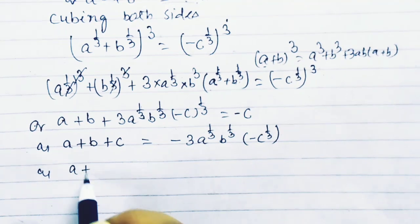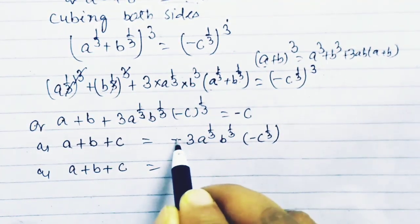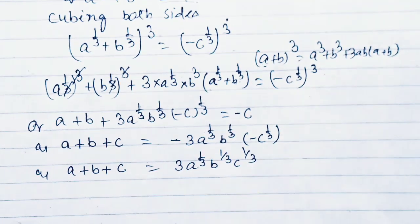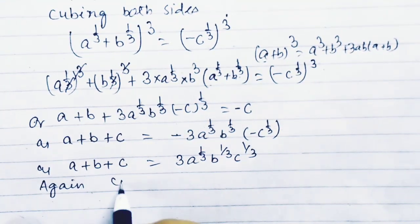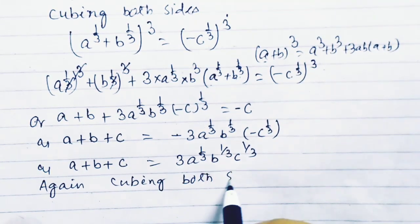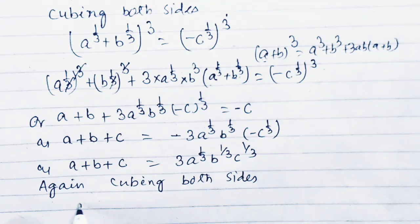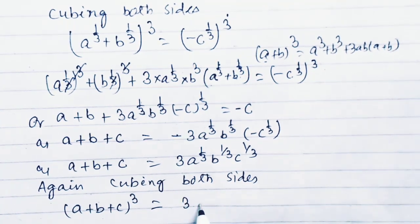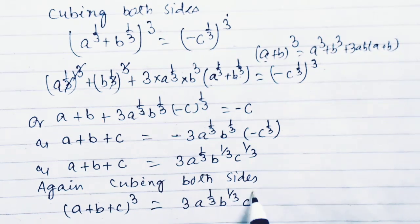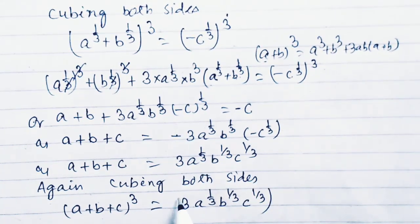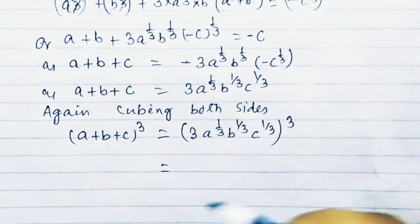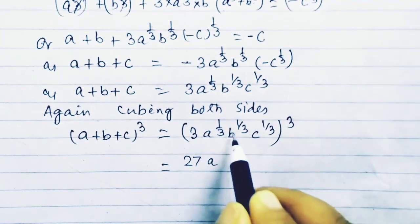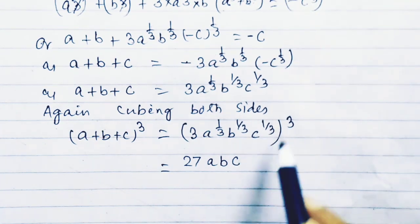So a plus b plus c equals 3 times a to the power 1 by 3 times b to the power 1 by 3 times c to the power 1 by 3. Cubing both sides: a plus b plus c whole cube equals 3 cubed times a to the power 1 by 3 cubed times b to the power 1 by 3 cubed times c to the power 1 by 3 cubed, which equals 27 times a times b times c.